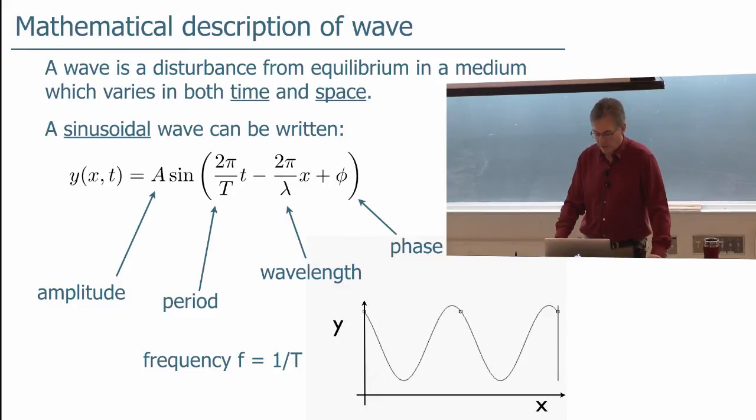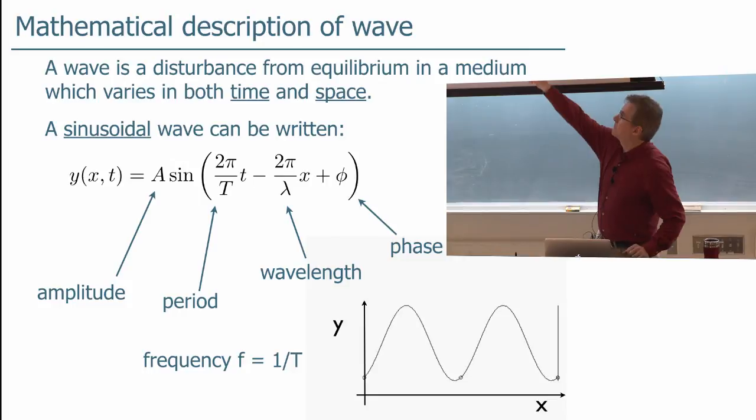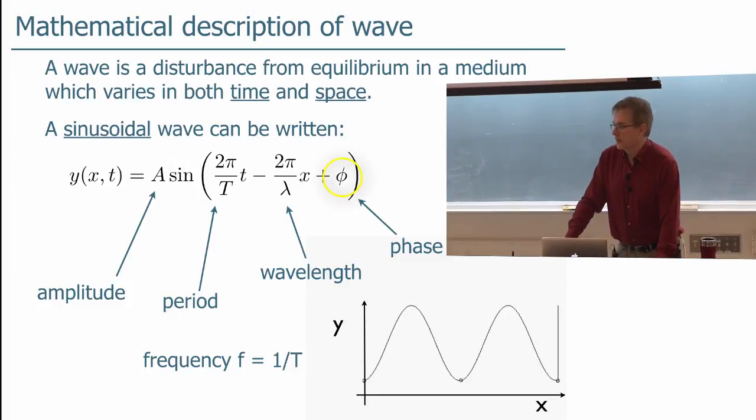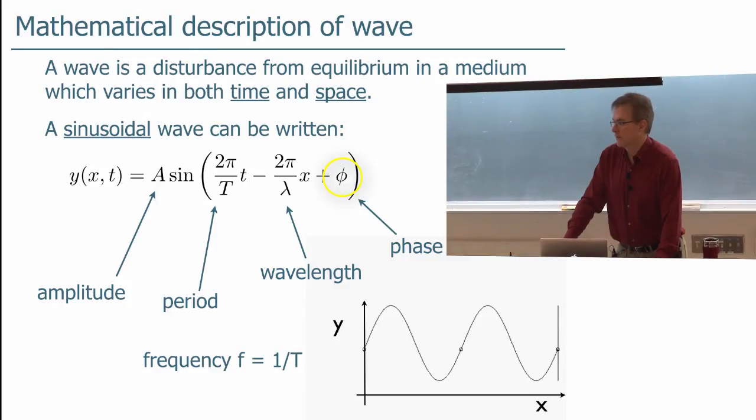Well, okay, so this phase, the small Greek phi there, is just there so that we can satisfy whatever our initial conditions are for the wave. You can usually pick a position x and or a time t equals zero, such that you can make the phase go away, or make it a cosine rather than a sine wave. We kind of rarely have to deal with the phase.